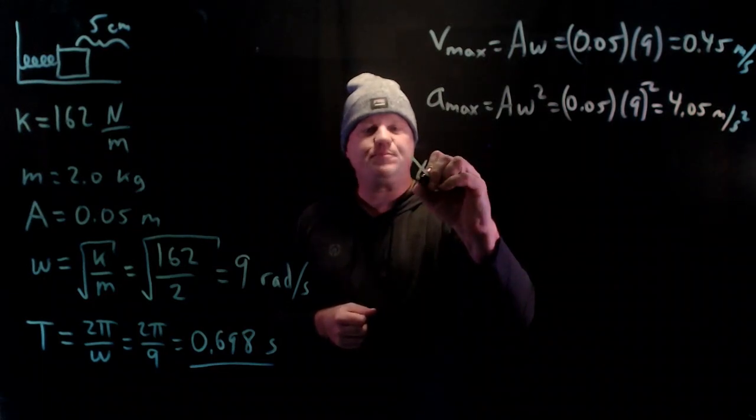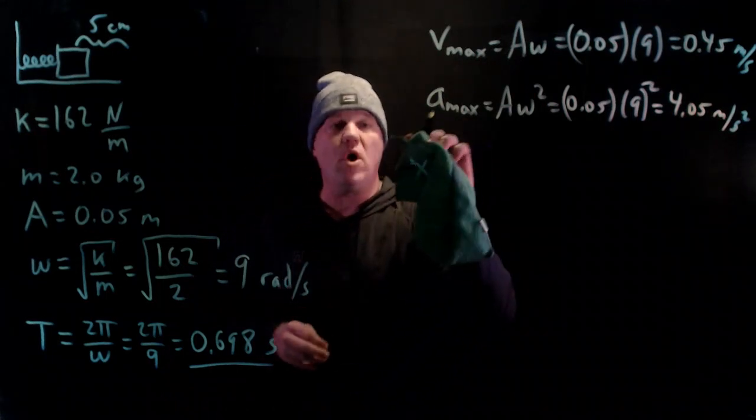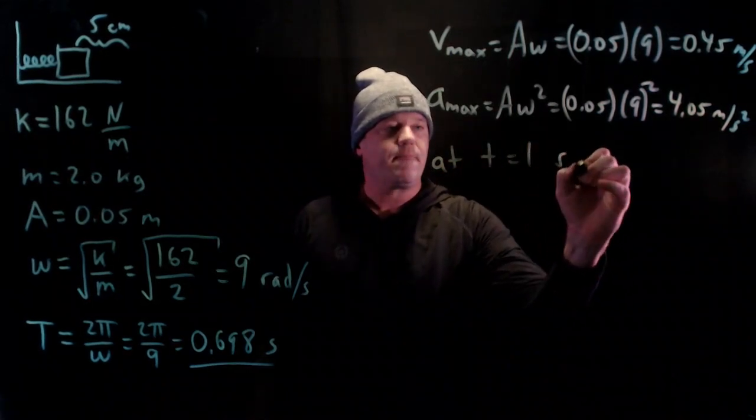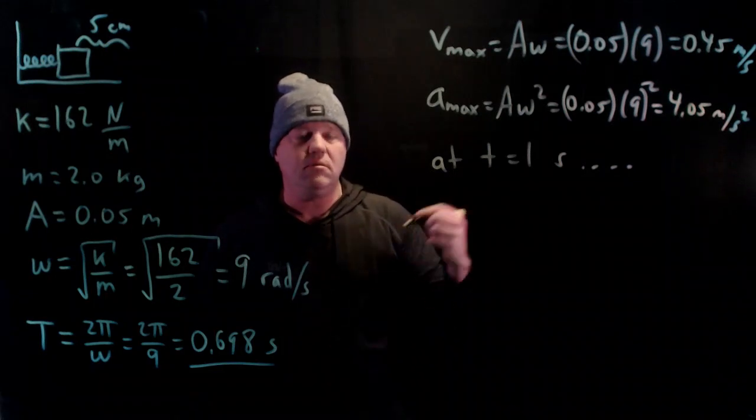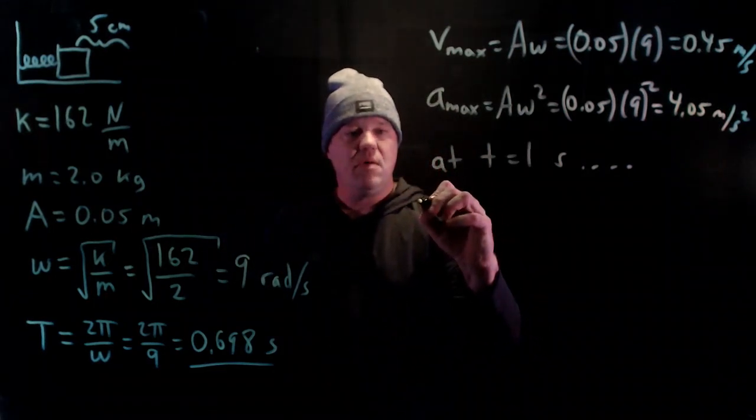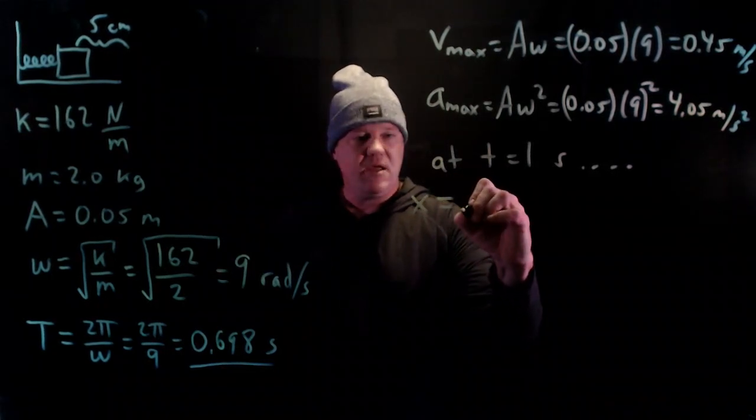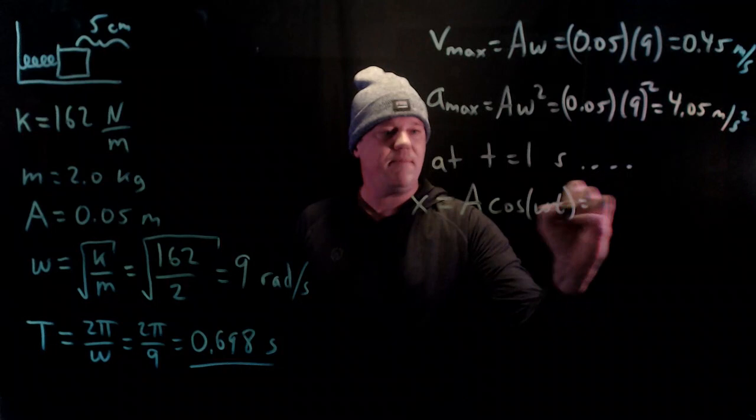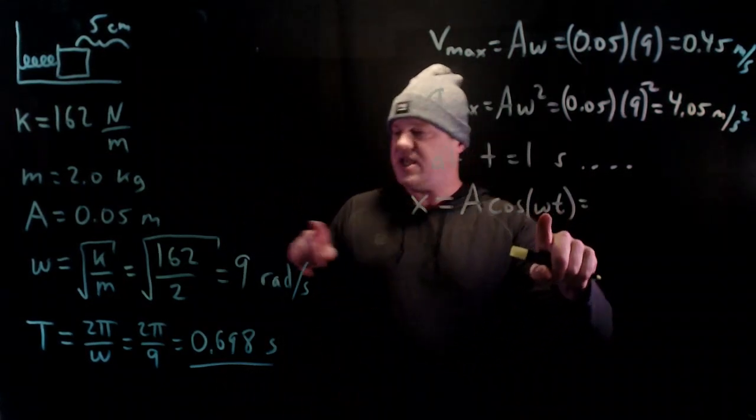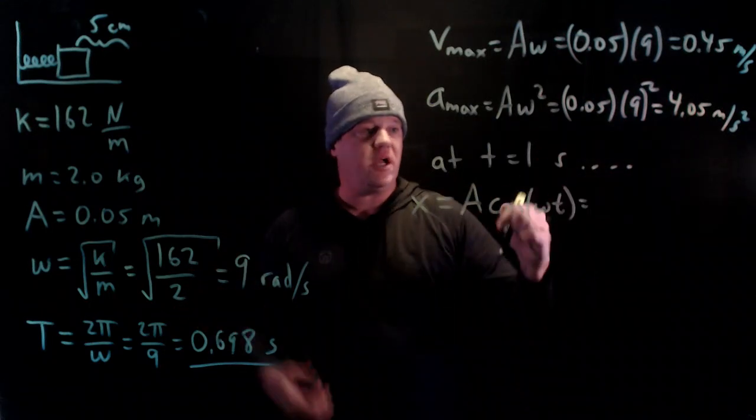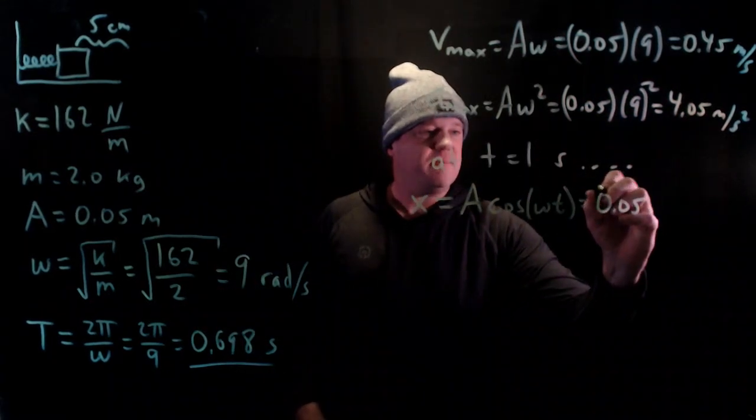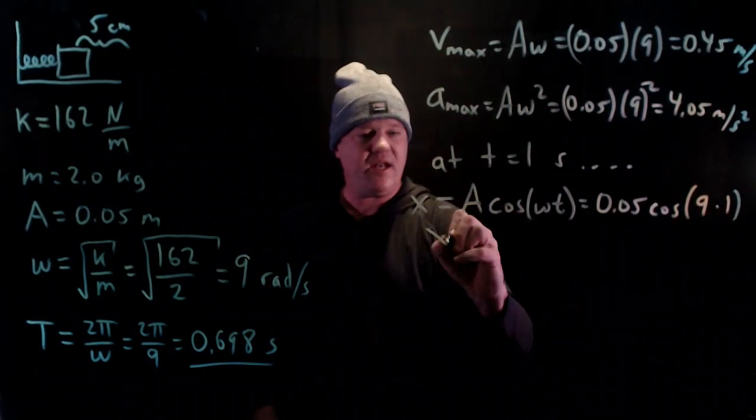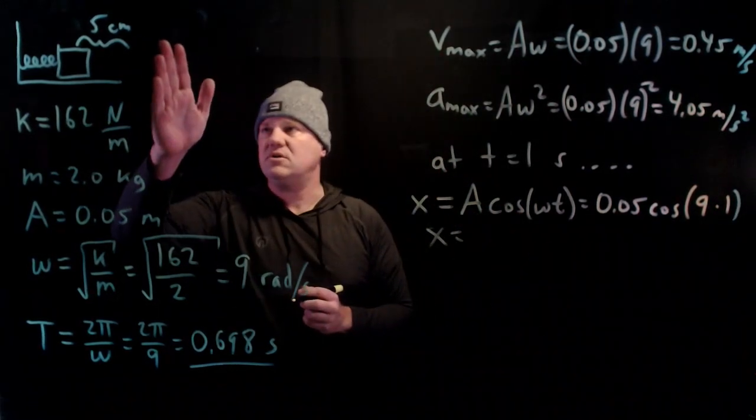We have the position as a function of time. I'm going to calculate all of these at t = 1 second. Where is it? How fast is it going? What's its acceleration? We can calculate that using these equations. Position as a function of time will be the amplitude times cosine of the angular frequency times time: x = A cos(ωt). You see how this angular frequency pops up all over the place. So 0.05 × cos(9 × 1), and if I release this from rest 5 centimeters to the right and wait for it to go...